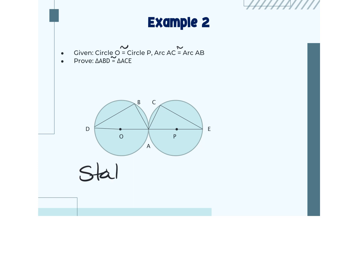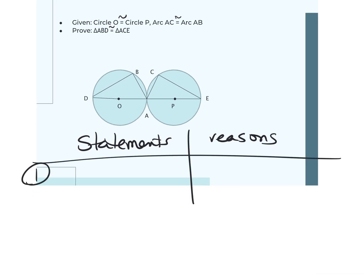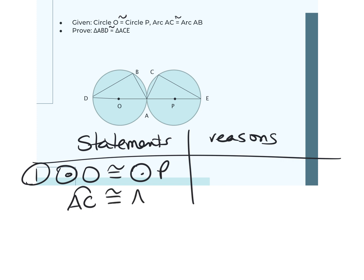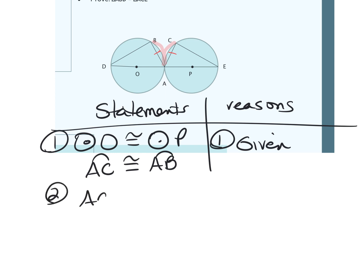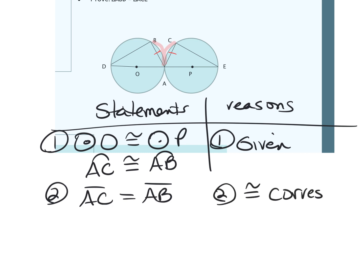Setting up columns for statements and reasons: Statement one — circle O congruent to circle P and arc AC congruent to arc AB. Reason: given. Statement two — because we have congruent corresponding arcs, their corresponding chords are also congruent. So chord AC is congruent to chord AB. Reason: congruent corresponding chords theorem.